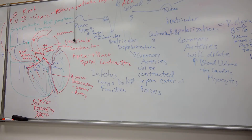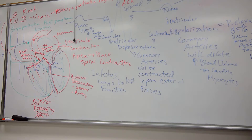Don't confuse the blood volume inside the ventricle with the blood feeding the ventricle from coronary arteries. The volume in the ventricle is systemic volume that needs to be kicked out every heartbeat to feed all organs — including the heart itself.